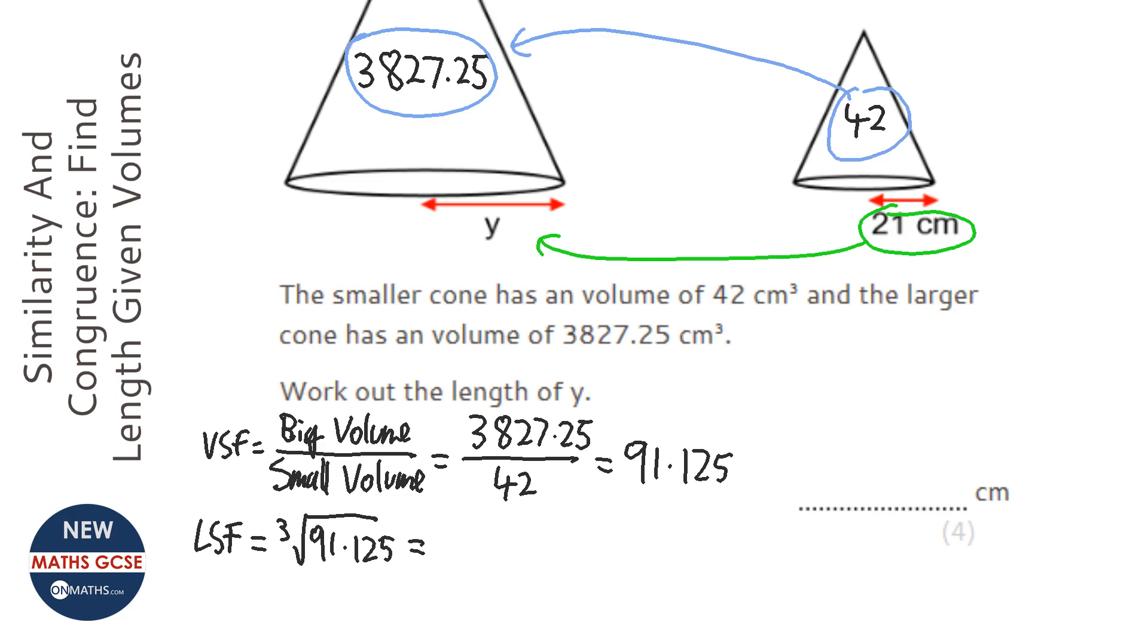So cube root the 91.125 and it is 4.5. So we know we're going to times 21 by 4.5 to get to the new length. So 21 times 4.5...